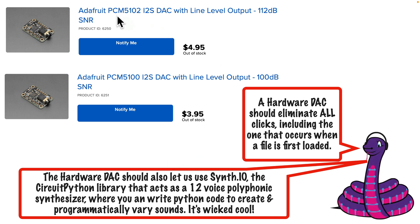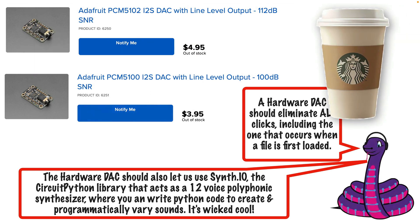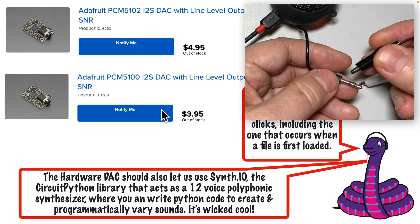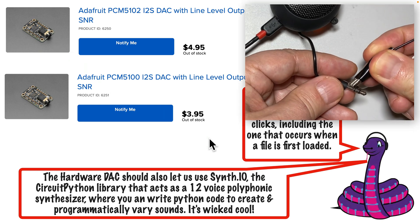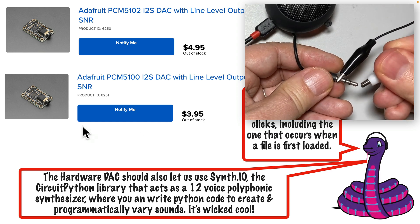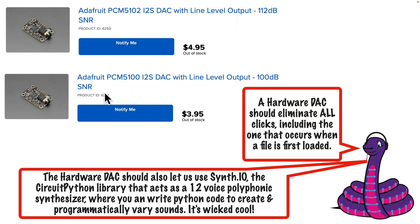The DAC I'll show is the Adafruit PCM5102. It's only $4.95 US and comes with a standard audio jack — that's probably cheaper than the last coffee you got at Starbucks. And your audio will be more stable plugged into a jack than it would be if you alligator clipped it to the audio pin. There's also a PCM5100 that's just a dollar cheaper with slightly less audio quality.